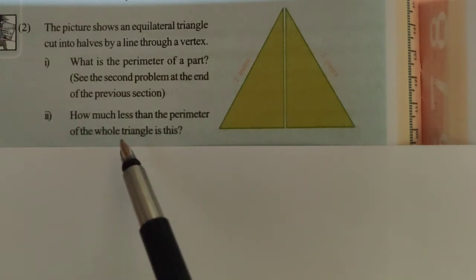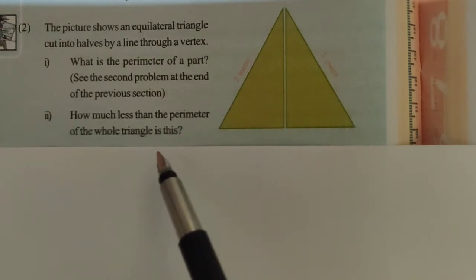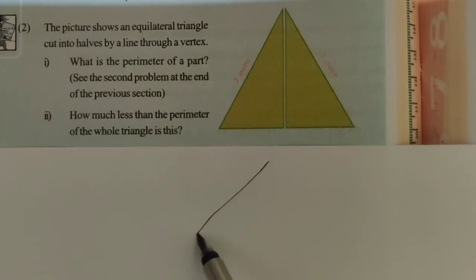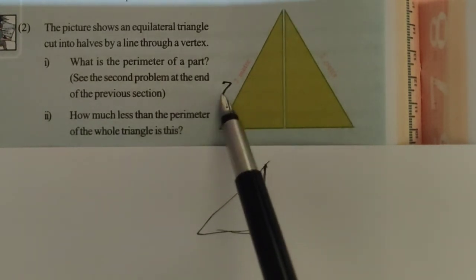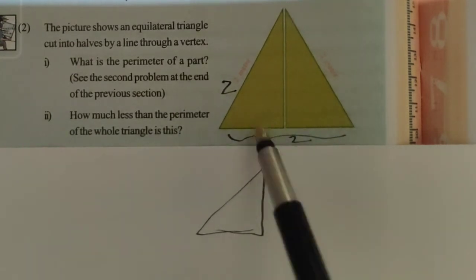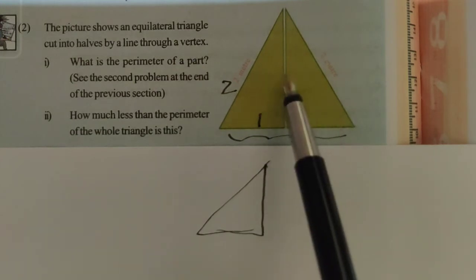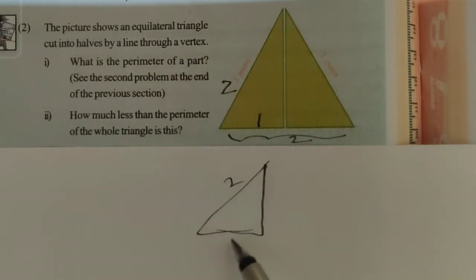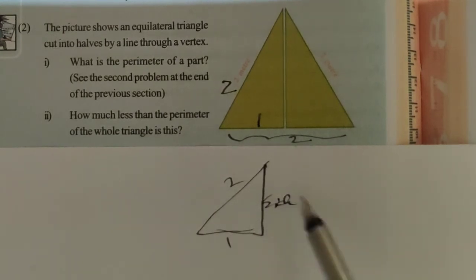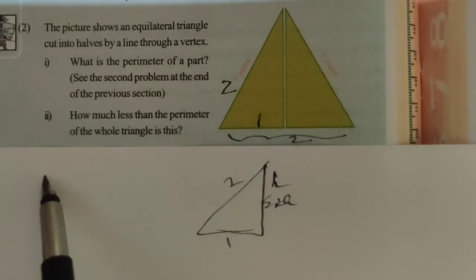We can take one half of this triangle. This is an equilateral triangle, so this side is 2 centimeters, this side is 2, and this side is 1. Now we want to find the remaining side. We can denote it as h, and then we can find the perimeter.